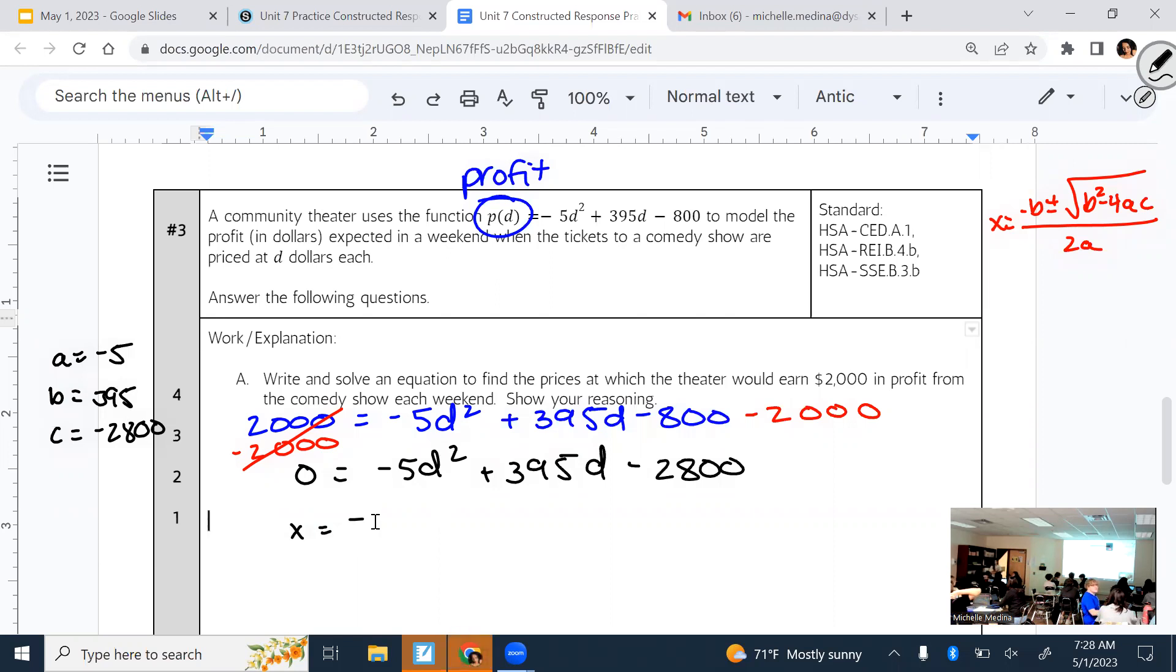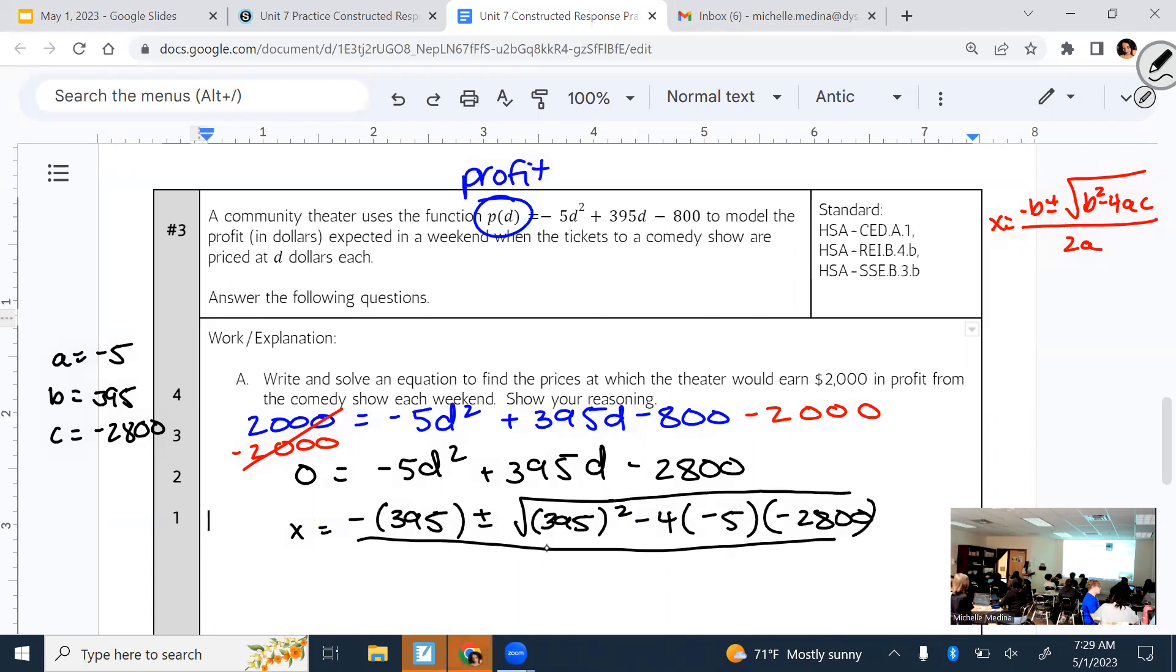So then table three, what might b be? 395 is correct. Table five, what is c going to be? Negative 2,800. Because if you had not moved this to the other side and you said it was negative 800, you would not get the right answer. So this is correct for a, b, and c. Then from there, plug it into your formula. What goes here where my mouse is, table six? 395. And then plus or minus square root of what goes here, table seven? 395, and then it will be squared, minus four times what, table eight? Negative five, and then times what, table nine? Good. All over two times what, table one? Negative five.